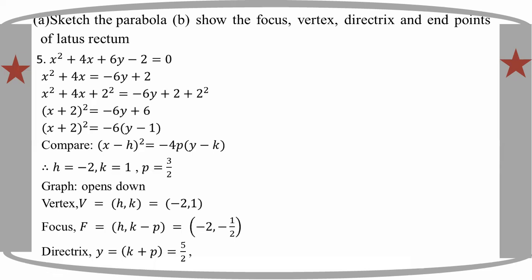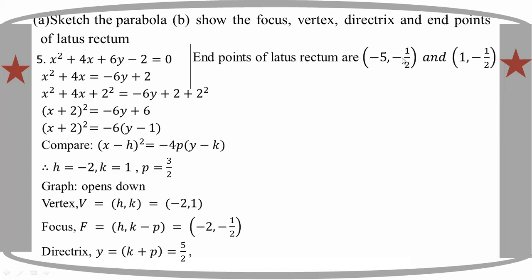Now for the latus rectum endpoints: we focus on the endpoints. Minus 1 by 2 plus 2p, where 2p is 3 by 2, giving plus 3. So we have minus 1 by 2, 3. And minus 5, 3, so minus 5, 1.